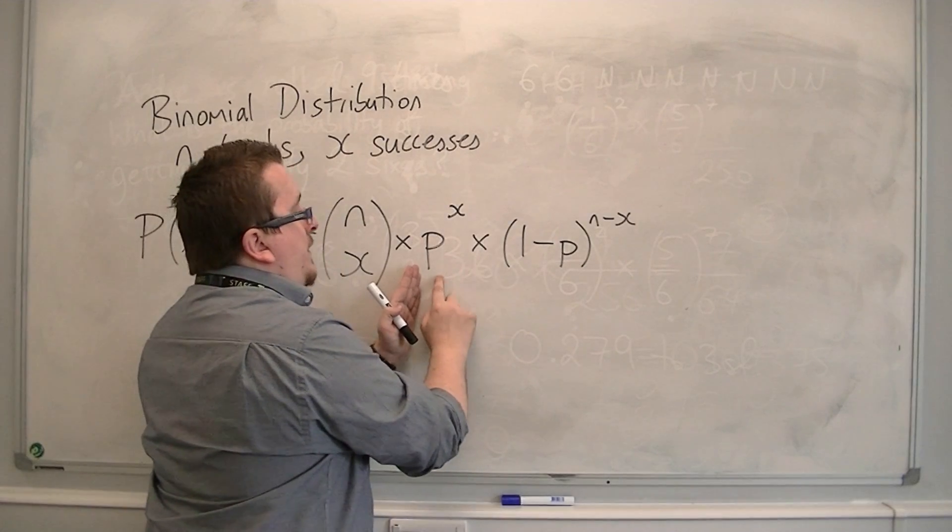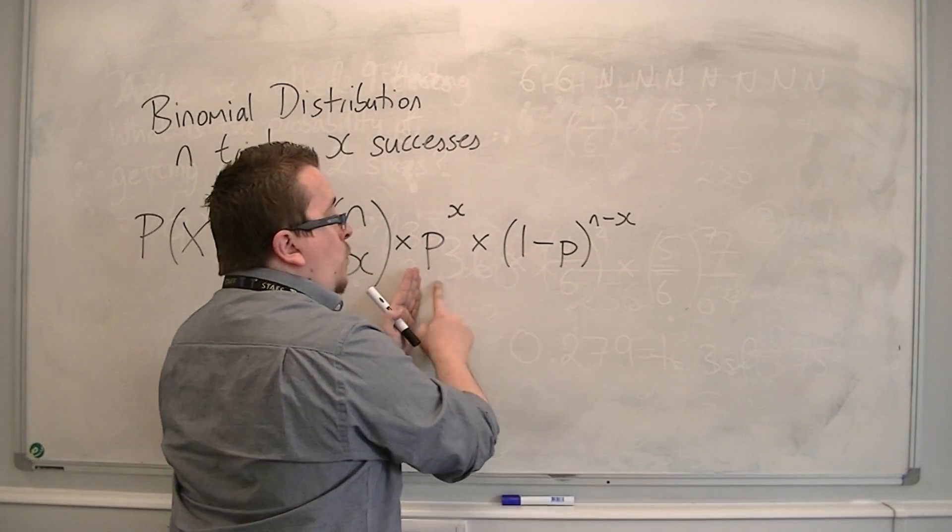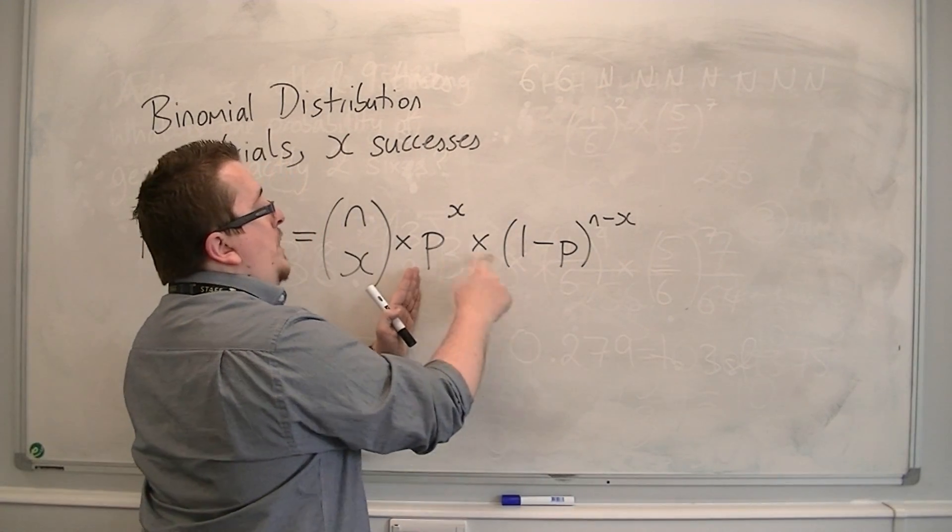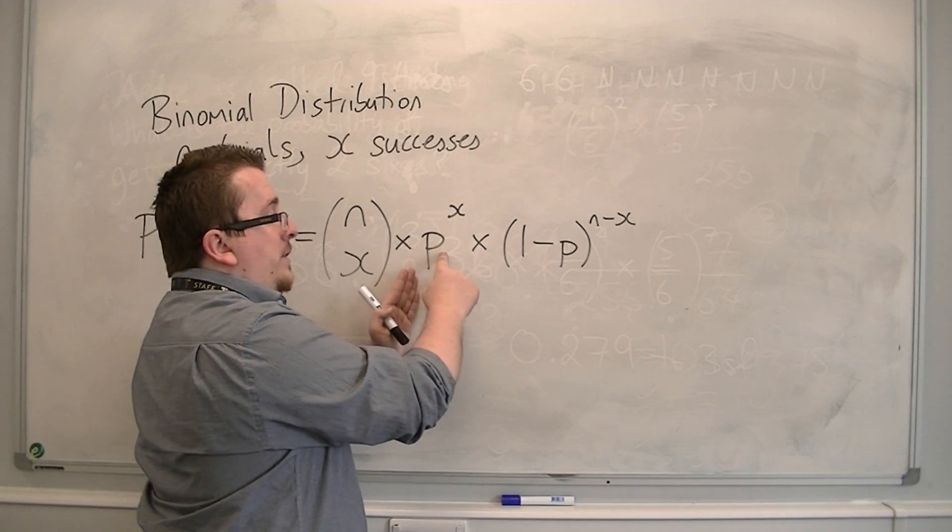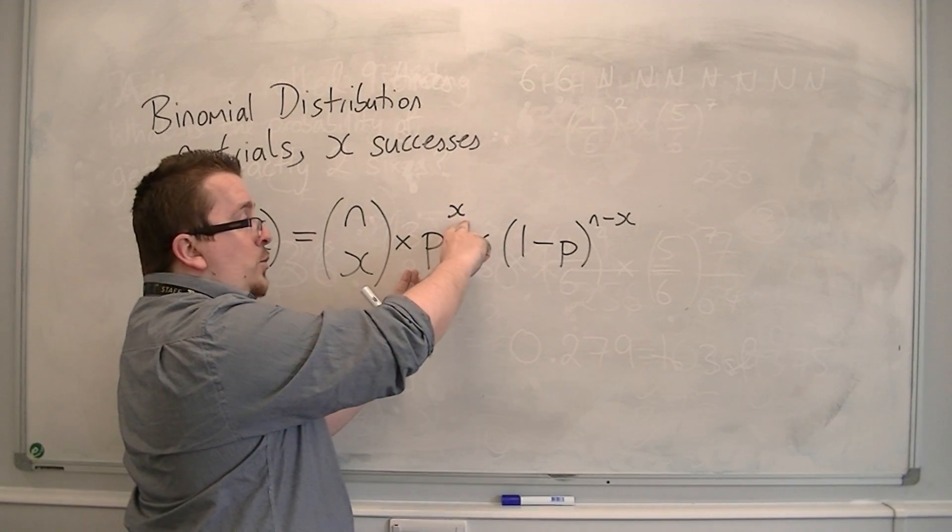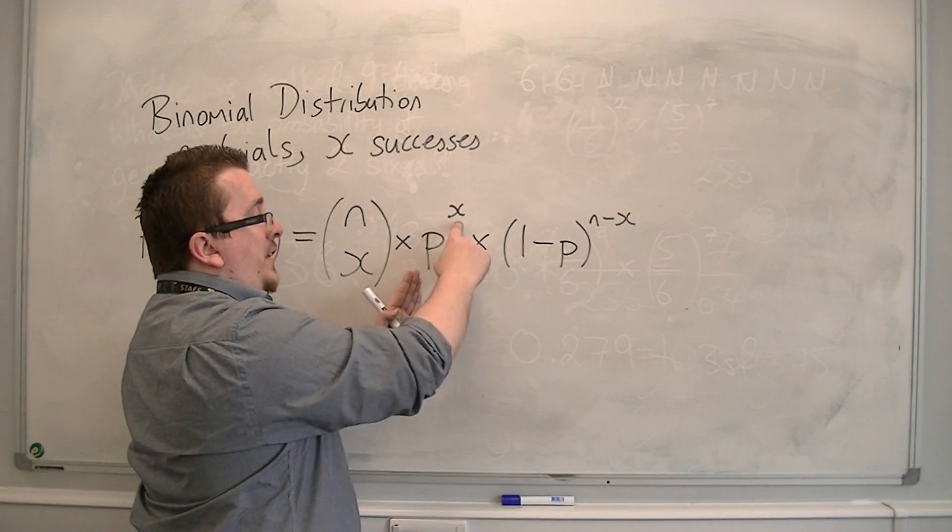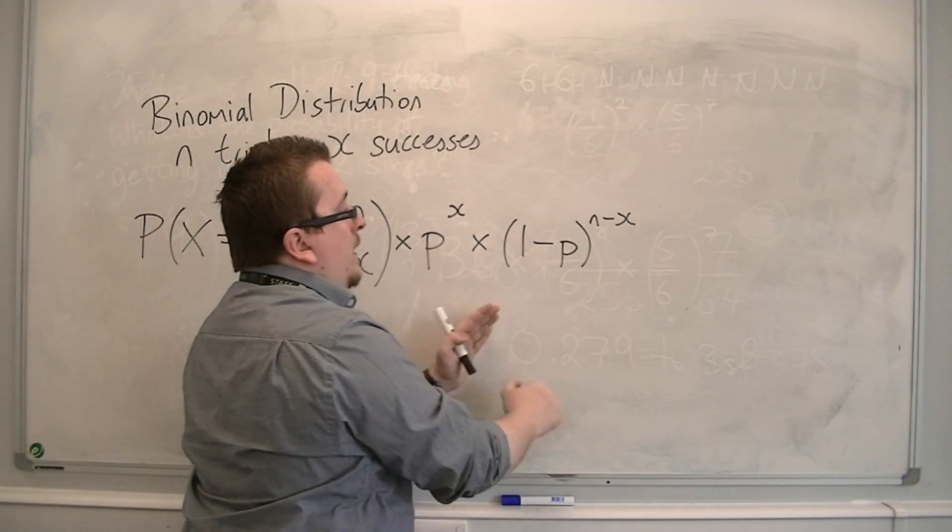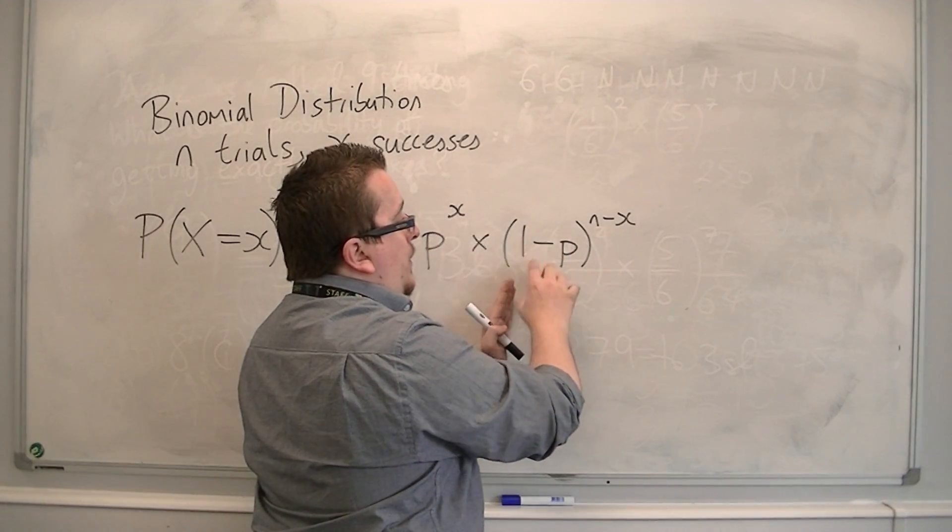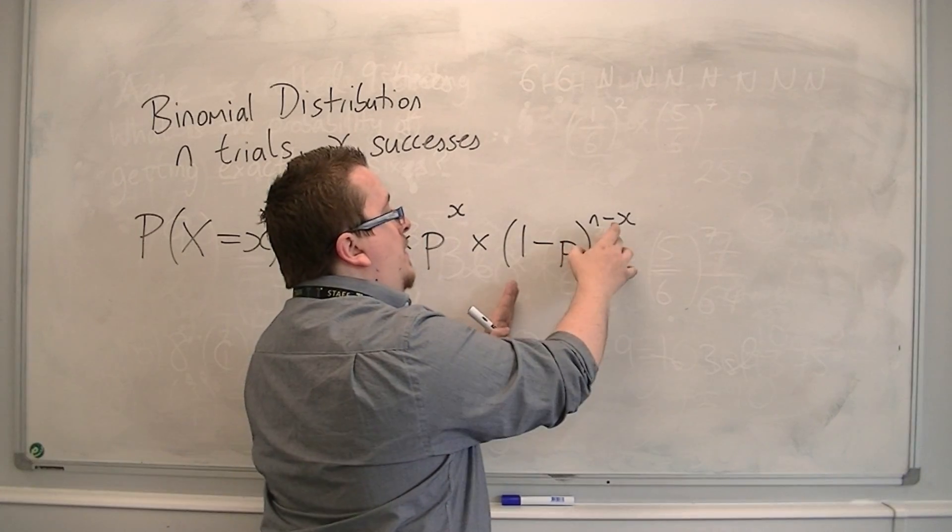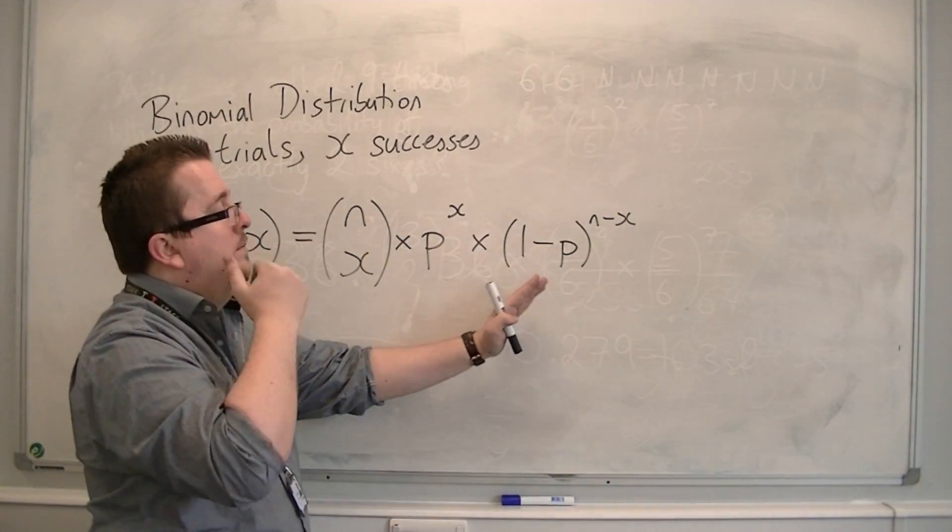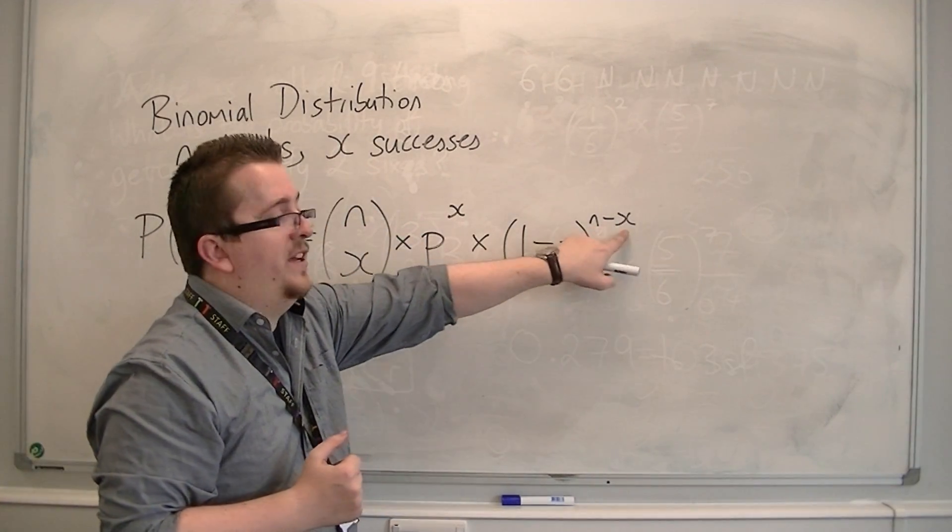Then I was looking at the actual probability of one possibility, which was one sixth to the power of two, because I wanted the six to come up twice. And then I had five sixths, one take away one sixth, to the power of seven, which was nine take away two.